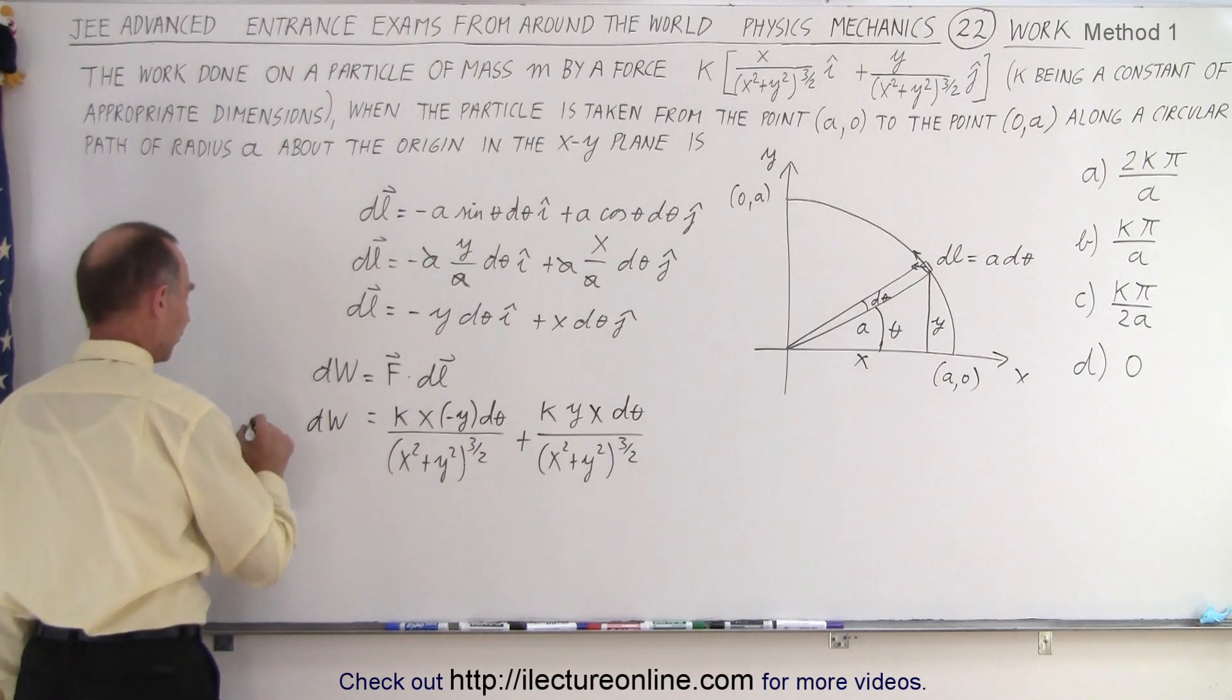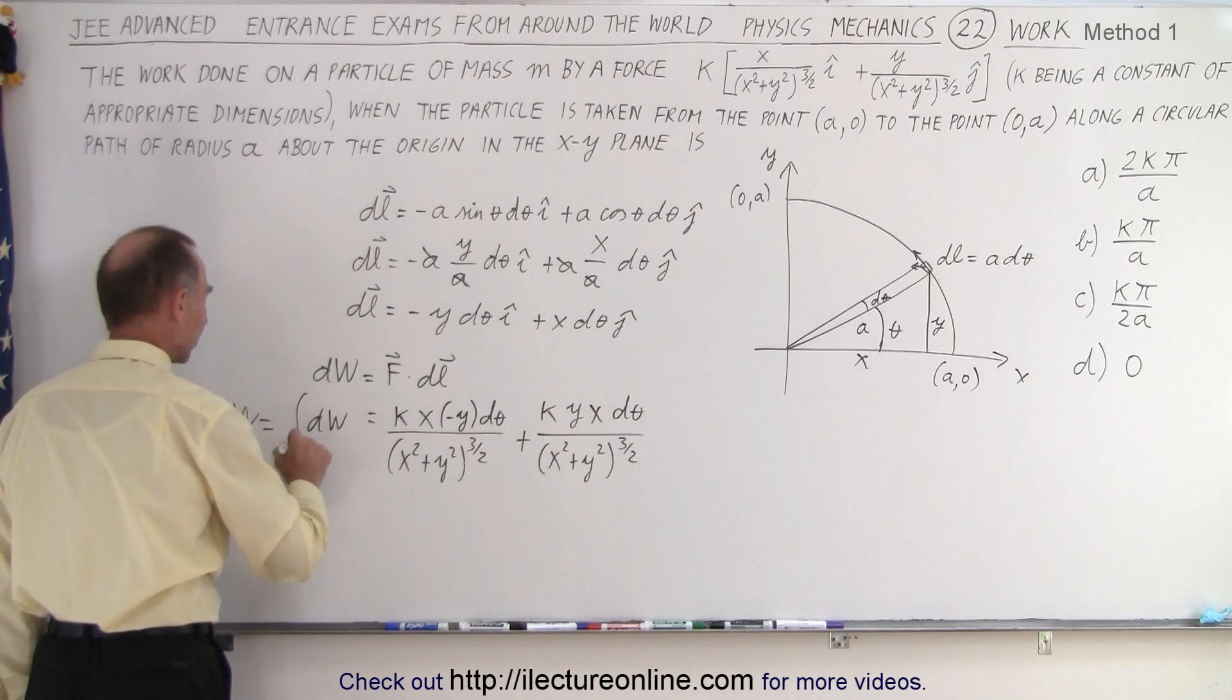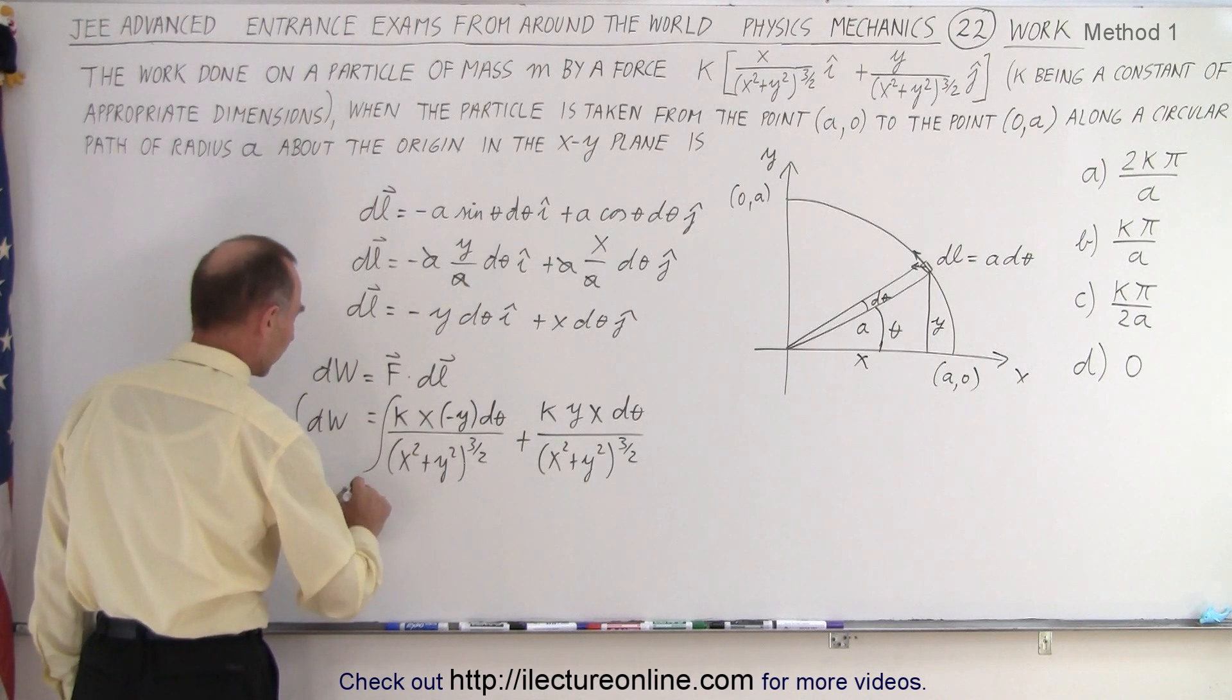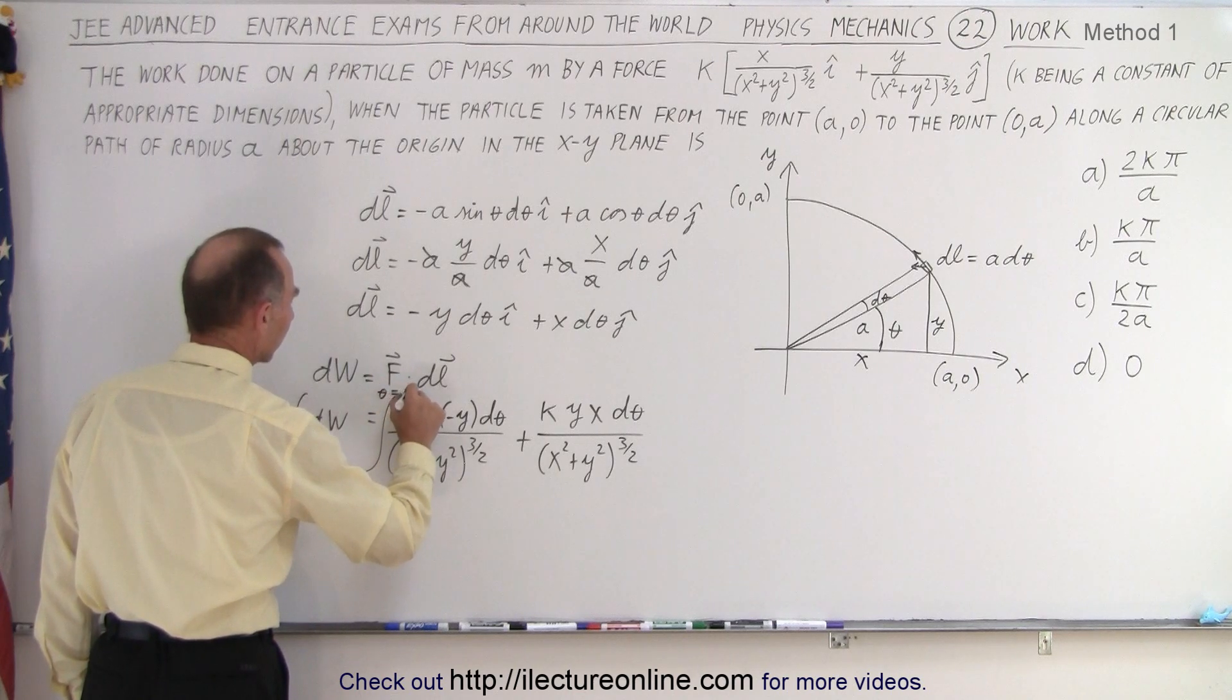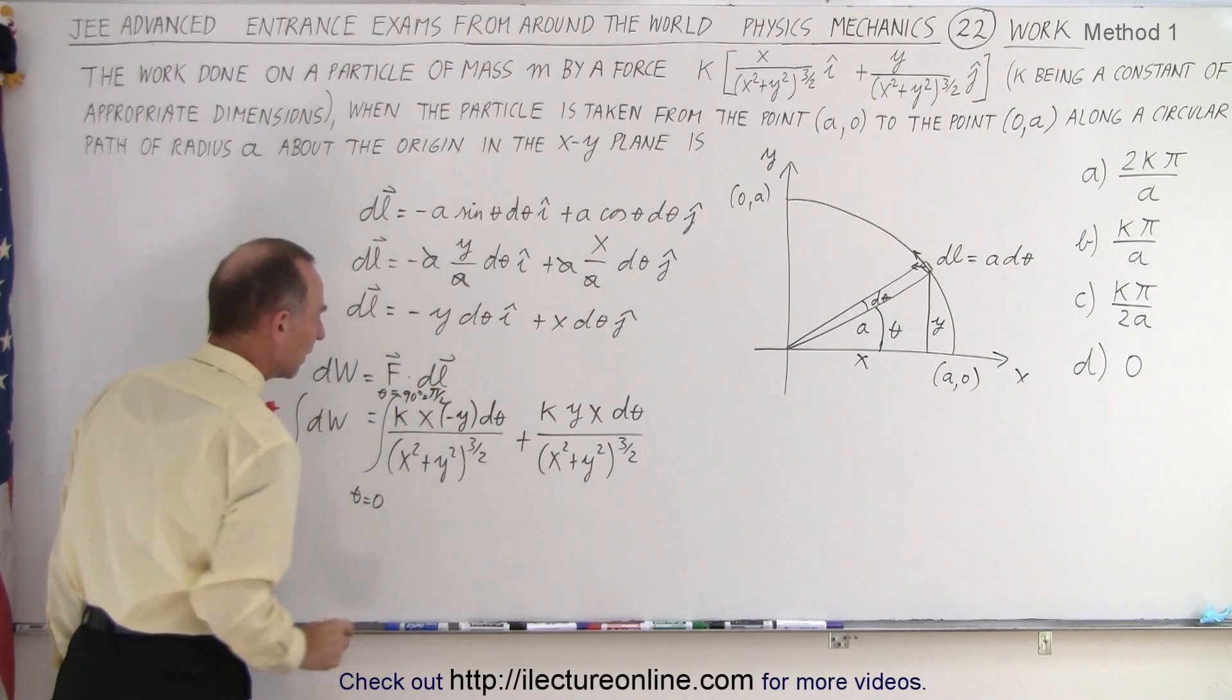F which is K times Y divided by (X squared plus Y squared) to the three halves power and then times DL which is X times d theta. That would be our dW. And then of course if we want the work done that's equal to the integral of dW which is the integral of this going from theta equals zero to theta equals 90 degrees or pi over 2. Now,